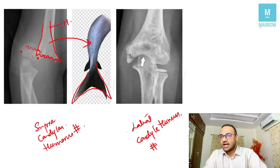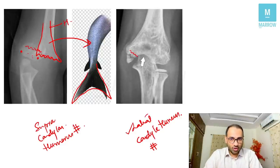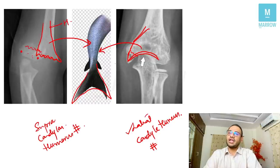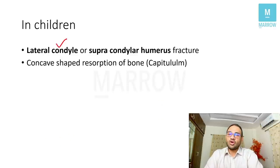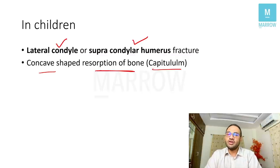In lateral condylar humerus fracture, if the fracture goes into resorption as the child grows — remember lateral condylar humerus fracture usually undergoes non-union — there is a concave deformity that forms, particularly of the capitulum. This concave deformity again looks like fishtail deformity. So it could be lateral condylar or supra-condylar humerus fracture, all happening at the distal end of the humerus.